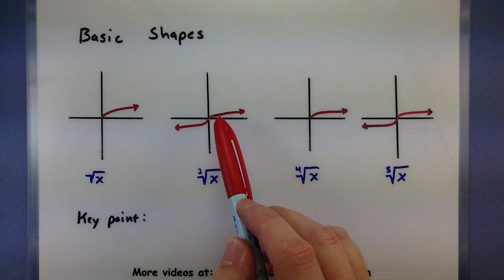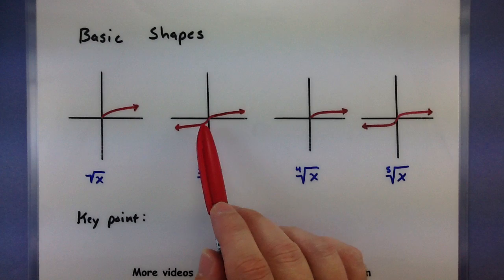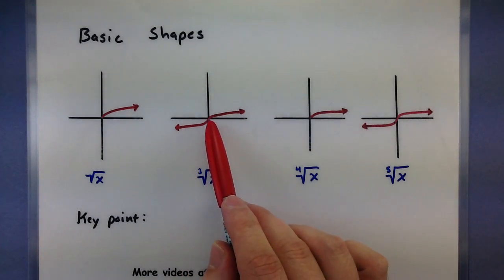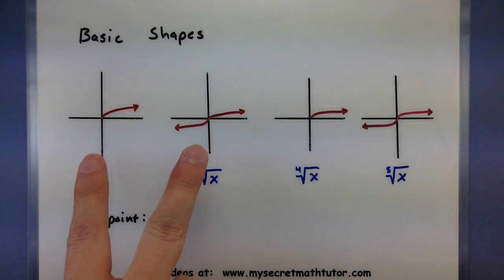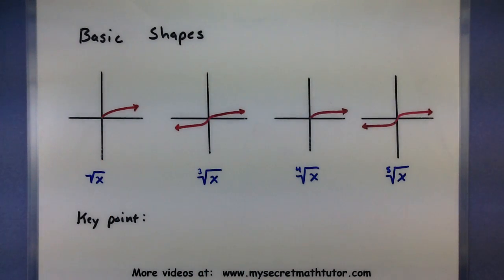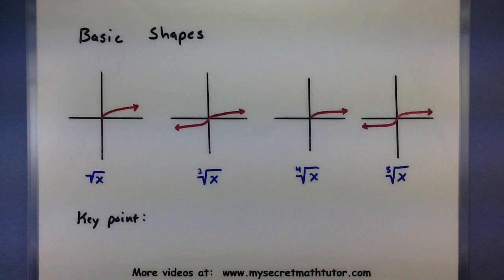Now if you have something like the cubed root it actually increases even slower than the square root and it actually goes in both directions. So you get one little upper half of an airplane wing over here and another one back over here. And again this one will also go through (0,0). Now these two are probably the two most important radicals that you could ever memorize.